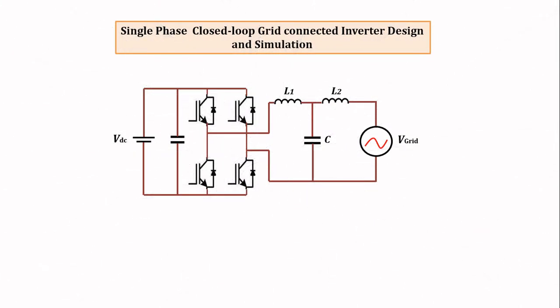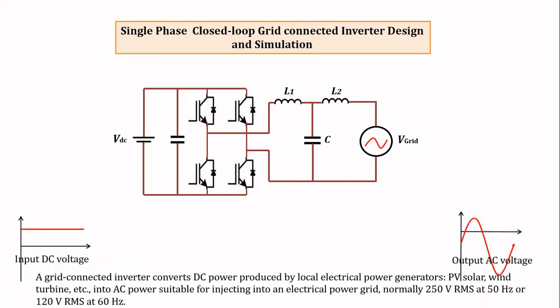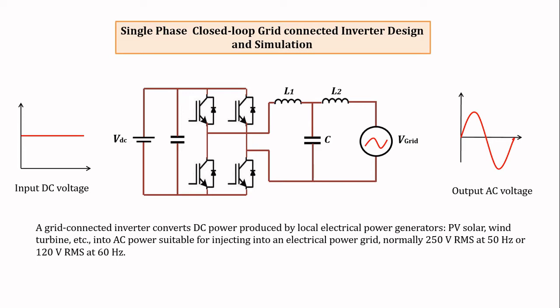Welcome. Today we are going to design and simulate the grid-connected inverter. Let me explain the basic schematic of a single-phase grid-connected inverter and its control mechanism. This is a block diagram of the grid-connected inverter — it consists of a DC voltage input, DC link, IGBT bridge, LCL filter, and the grid. A grid-connected inverter converts DC power produced by local electrical power generation such as PV solar or wind turbine to AC power suitable for injecting into an electrical power grid.